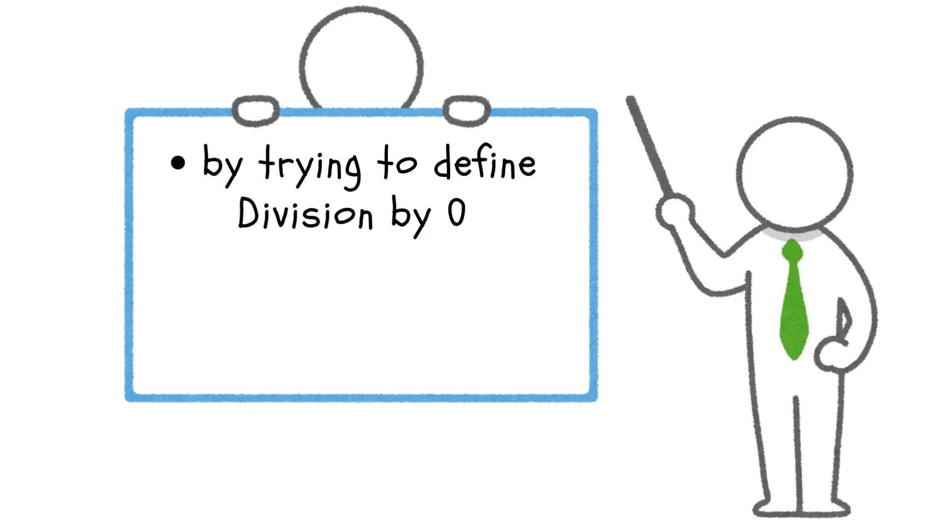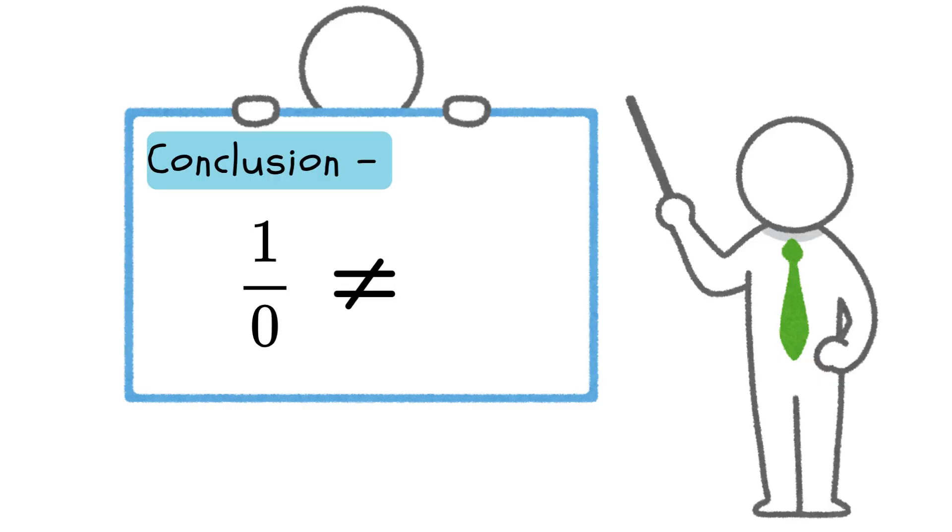By trying to define division by zero, we created a system where all numbers are equal and math itself stops working. So we are forced to conclude that one divided by zero is not infinity. It is and must be undefined.